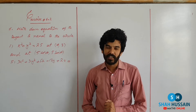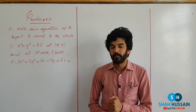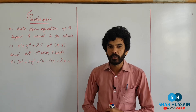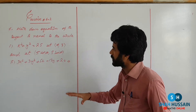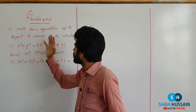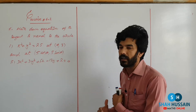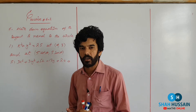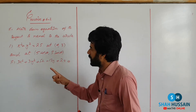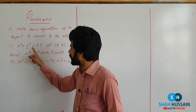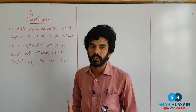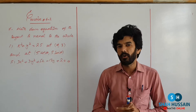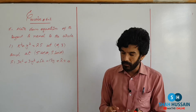Assalamualaikum dear students, this is Shah Hussain. Aaj ke lecture mein hum attempt karenge second year mathematics Exercise 6.2. Yahan par according to smart syllabus, first question hai: write down the equation of tangent and normal to the circle. Part (i) mein equation of circle hai x² + y² = 25 aur point given hai (4, 3).